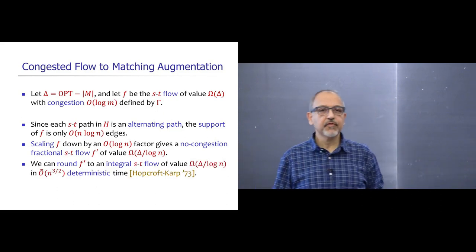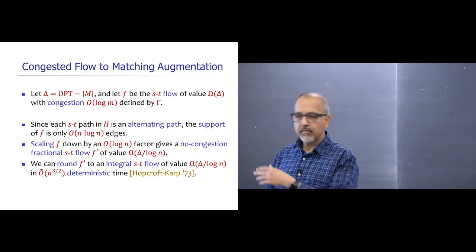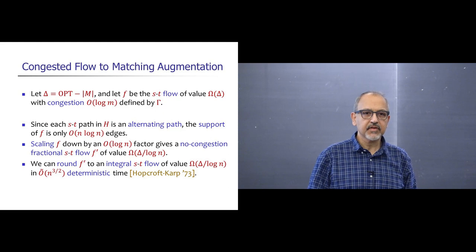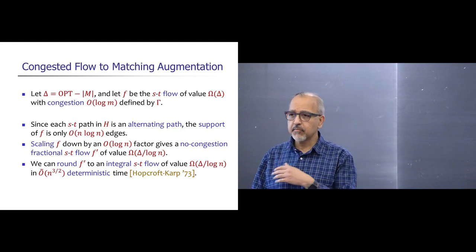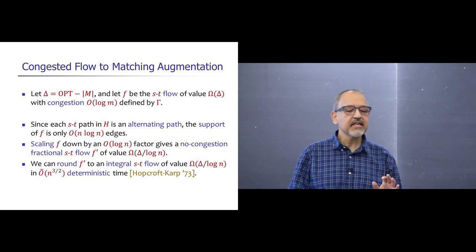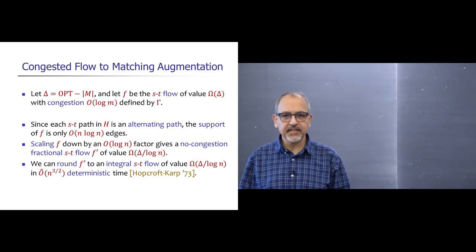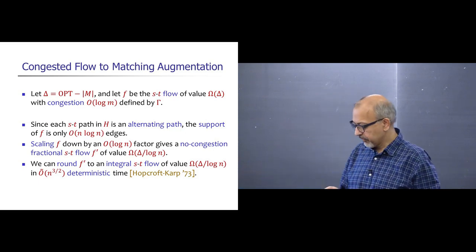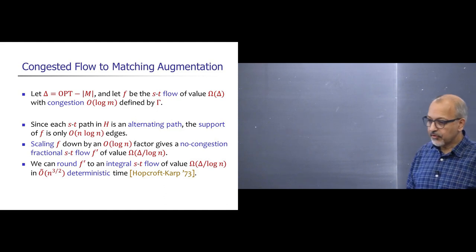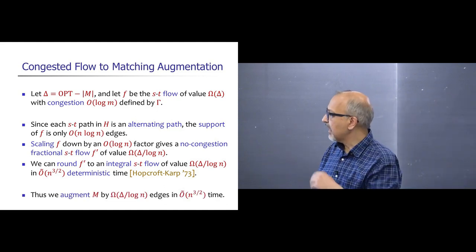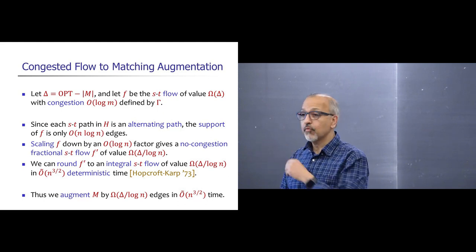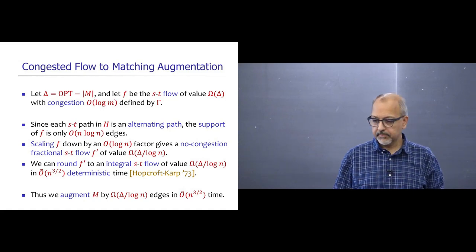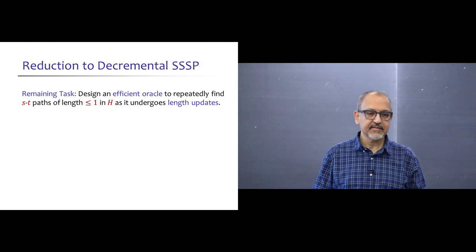Since the network has integer capacities, we can round f' to an integral S-T flow of the same value in O(n^1.5) deterministic time by running the blocking flow idea of the Hopcroft-Karp algorithm — it's as if we're solving bipartite matching on a graph with O(n log n) edges. This means we can augment M by Ω(delta / log n) edges in O(n^1.5) time.